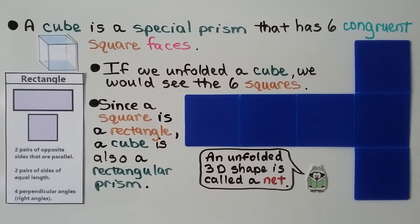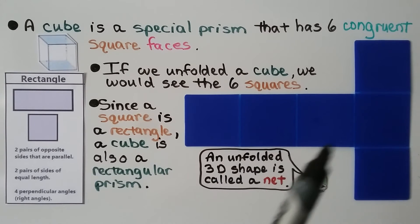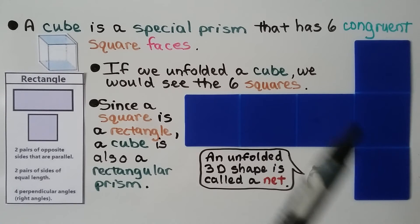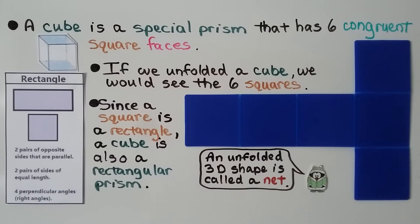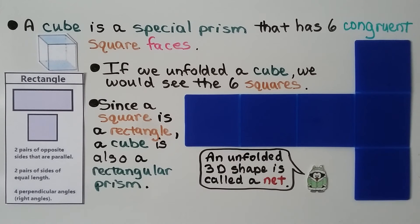A cube is a special prism that has six congruent square faces. If we unfolded a cube, we would see the six squares. And since a square is a rectangle, a cube is also a rectangular prism. When we unfold a 3D shape, it's called a net. We can do it for prisms and pyramids — we can do it for any 3D shape.